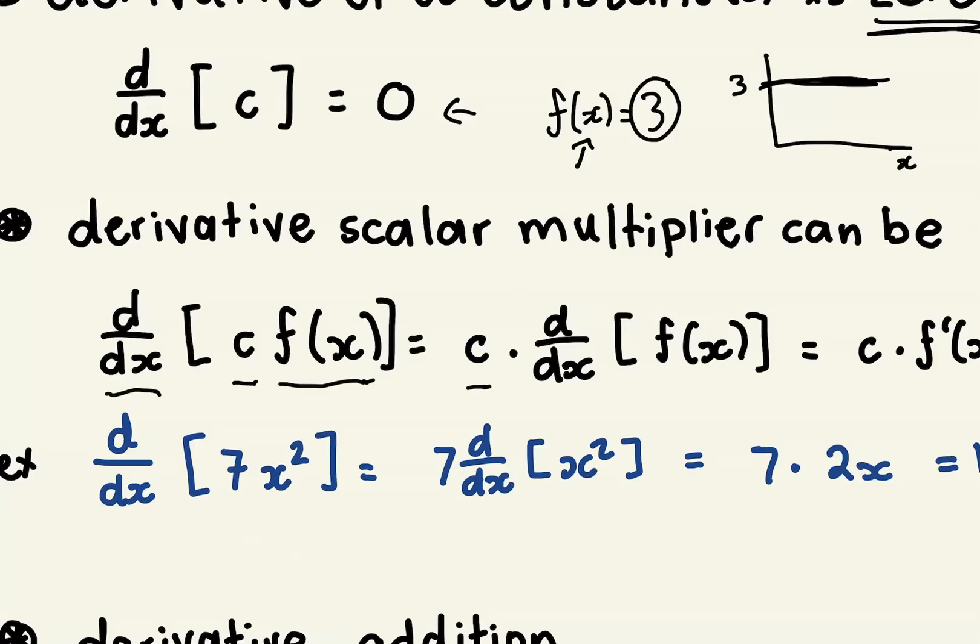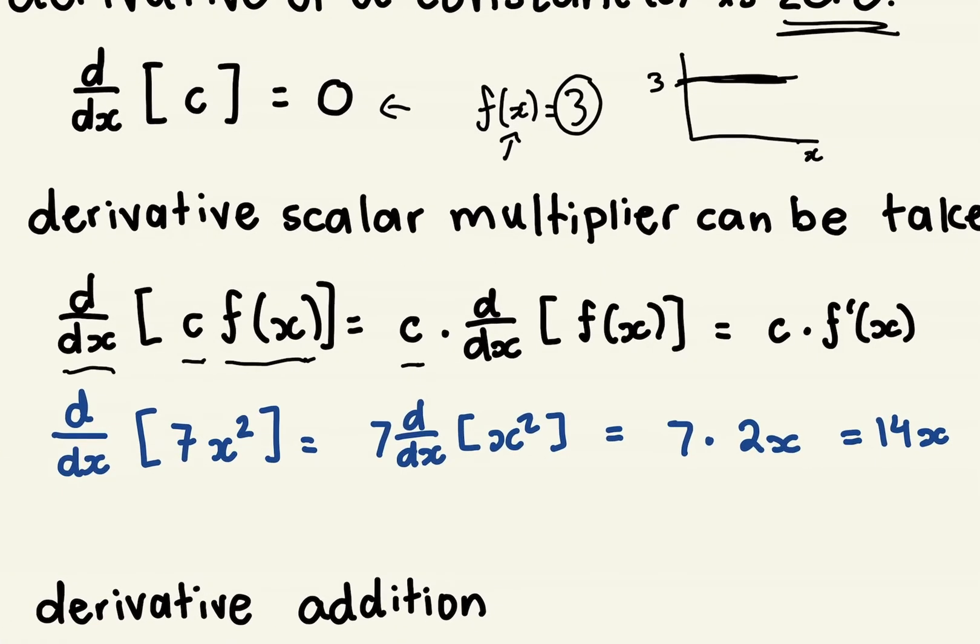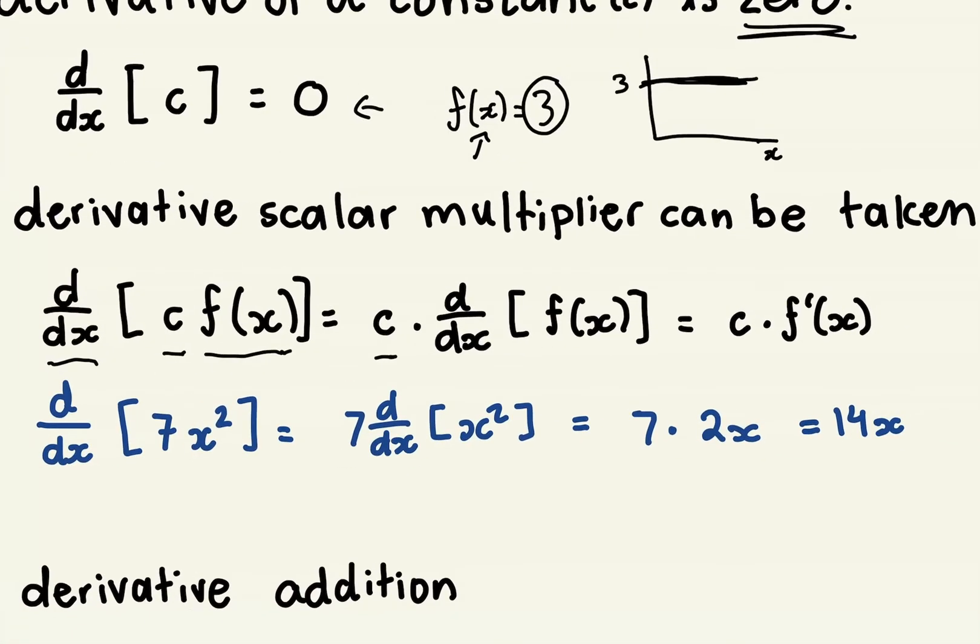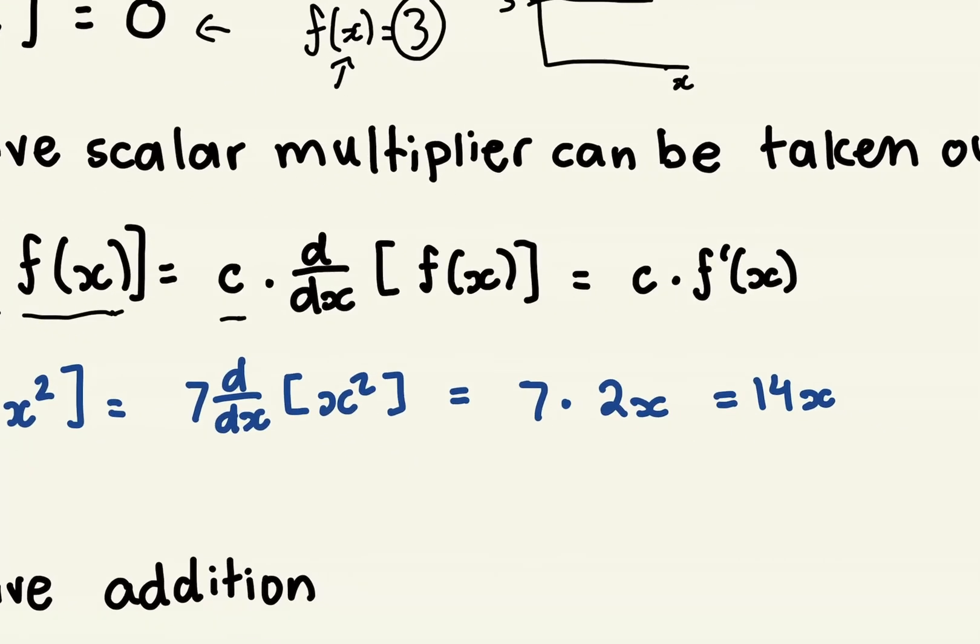But really, when you're doing that, you're actually following this rule, because what you can do is pull the 7 out. As we see over here, it's been pulled out. And then you can use the power rule to get the derivative of x², which is 2x. Then you can multiply 7 by 2x and get 14x, which is the derivative.